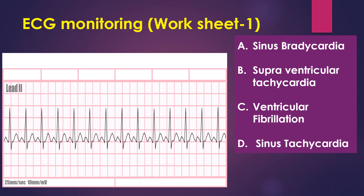Here you can see the P waves are present following the QRS complex. So it must be sinus, because if the P wave is present you have to understand that the electrical impulse is started from the sinus node. So it must be sinus bradycardia or sinus tachycardia. It is not supraventricular tachycardia or ventricular fibrillation.